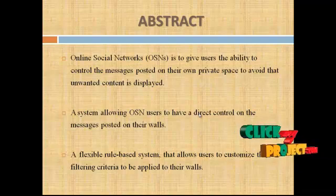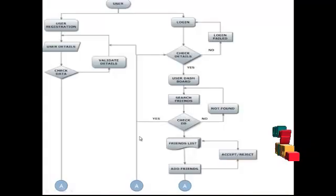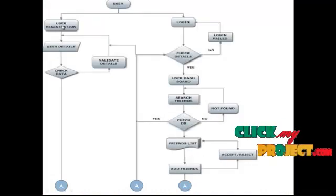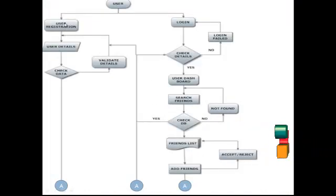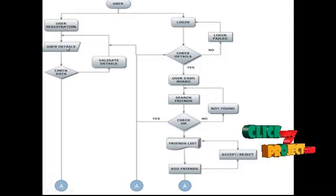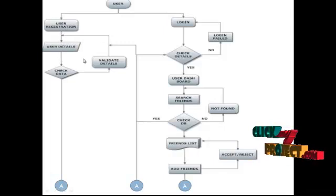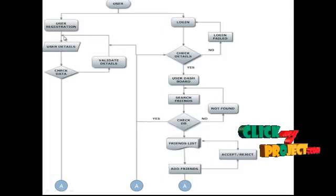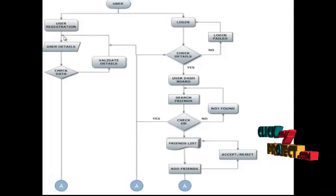Now let's see the data flow diagram of our project. Here, the user needs to register in the online social network. After that, they need to provide user data in order to register. After providing the details, we will be checking those details in the database because an already registered user should not be registered again.